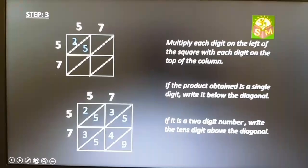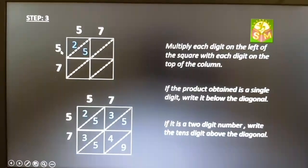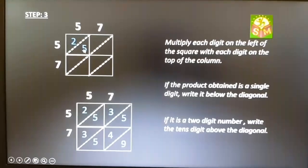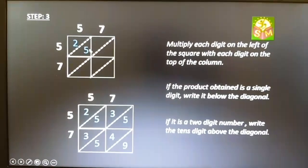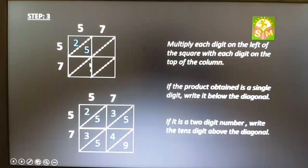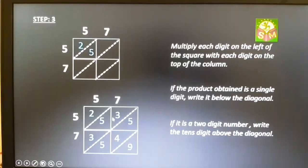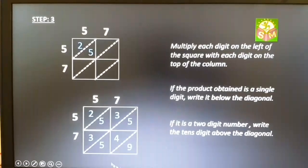The product of 5 and 5 is 25. 25 can be written as shown in the figure. Complete the table with the products of the respective numbers.